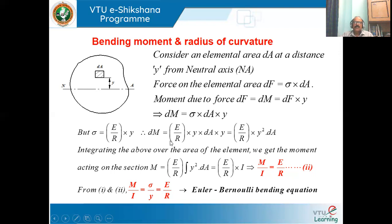By substituting the value of sigma, we get dM = (E/R) · y² · dA. This is for one layer. Since the beam is made up of many such layers, we integrate: M = (E/R) · ∫y² dA. E/R is constant, and ∫y² dA is the total moment of inertia I. Simplifying, we get M/I = E/R. We already have E/R = σ/y, therefore the complete Euler-Bernoulli bending equation is M/I = σ/y = E/R.